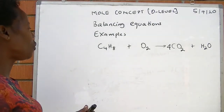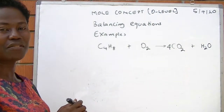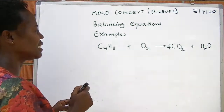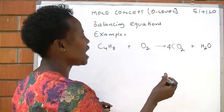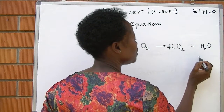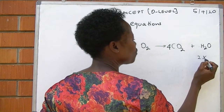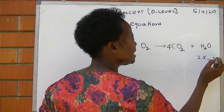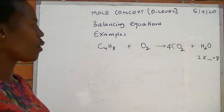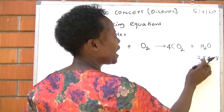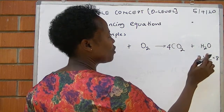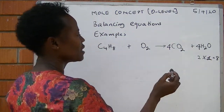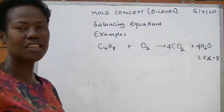Next, we go to hydrogen. On the reactant side we have eight times one, which is eight hydrogen atoms. On the product side we have two times one, which is two. We need a factor that multiplies two to get eight — that factor is four. Introducing four in front of water gives four times two, which equals eight hydrogen atoms. The hydrogen now balances.